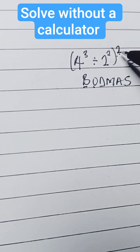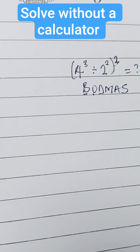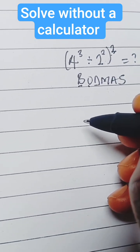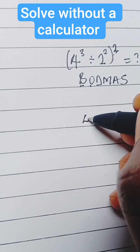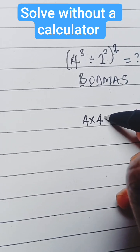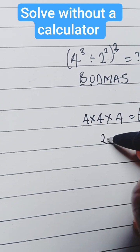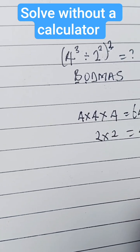Now, 4 to the power of 3 is 64. That is 4 times 4 is 16, times 4 is 64. And then 2 times 2, that is 4.